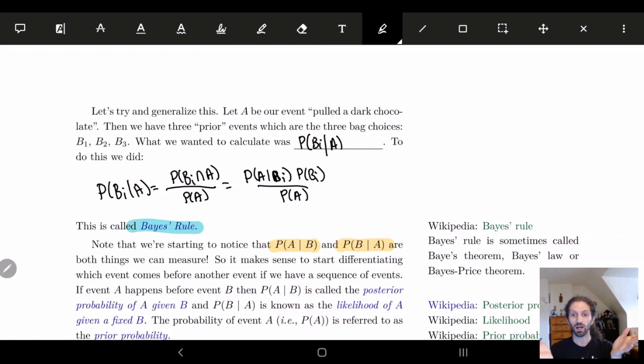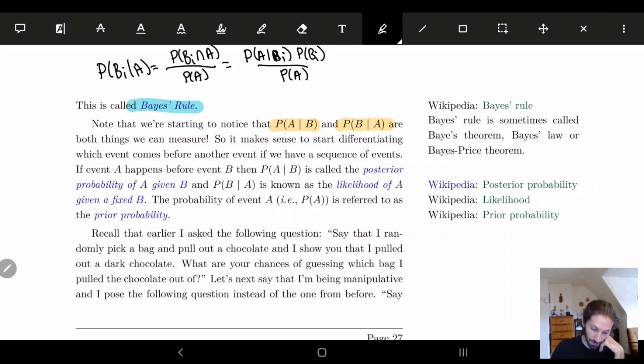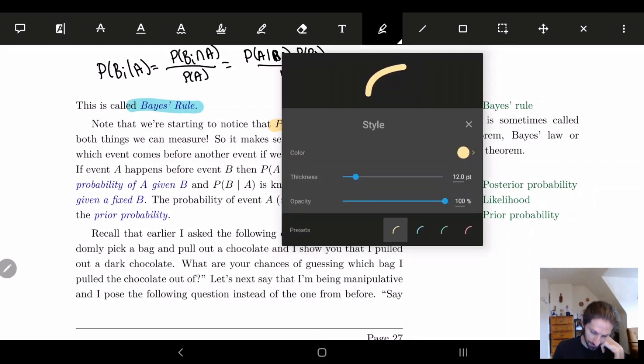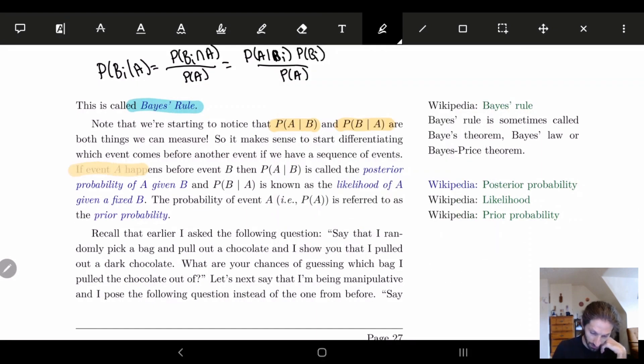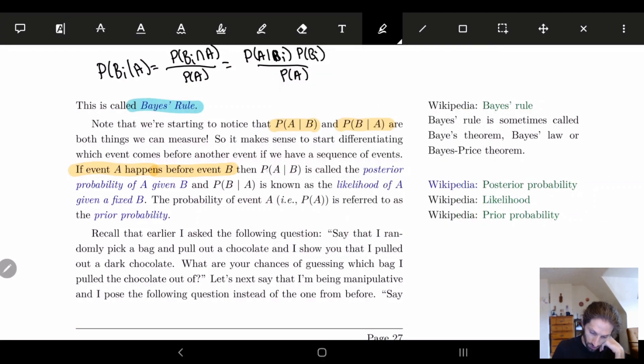We're going to actually add some terminology to all this. If event A happens before event B, then the probability of A given B is called the posterior probability of A given B.